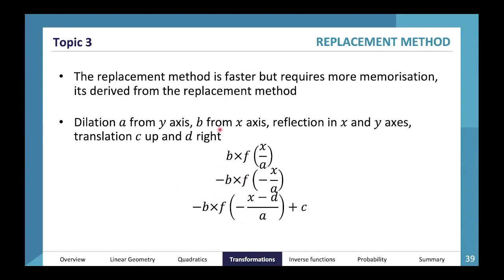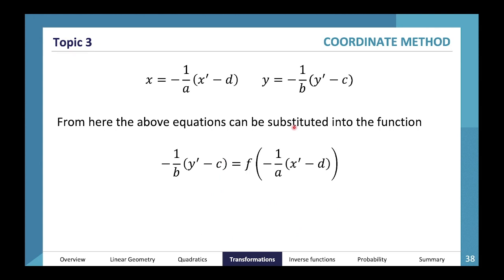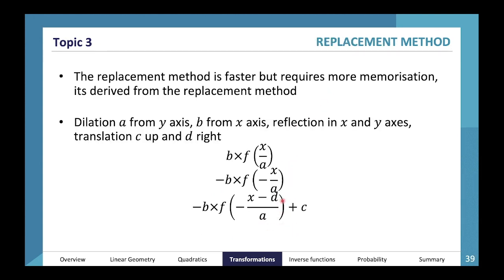When we dilate from b (from the x-axis), we don't reciprocate. When we go right we apply negative, and when we go left we apply positive for x. It's essentially flipping everything for x: going right means minus d, dilating a from y-axis means dividing by a instead of multiplying. That's why I found this method prone to error and preferred the coordinate method.